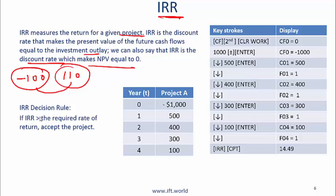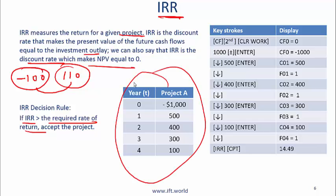The IRR decision rule is that if the IRR is greater than the required rate of return, then you accept the project. If you are doing mutually exclusive projects, the IRR rule is to accept the project with the highest IRR. If you have numbers like this, I do not want you to write the NPV formula — what I want you to do is calculate the IRR using the calculator.